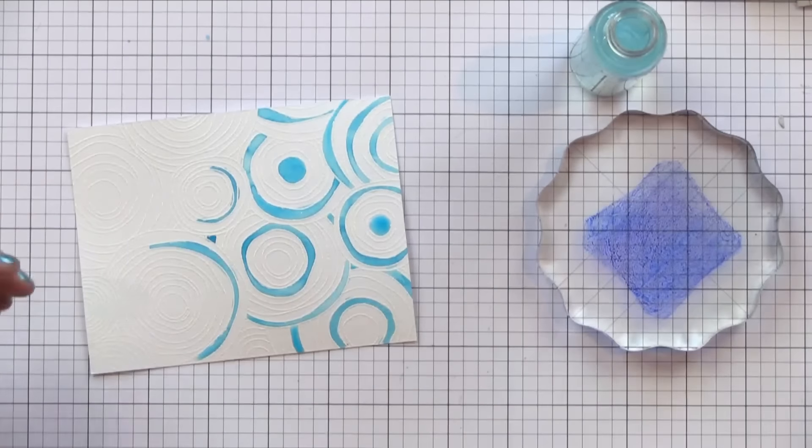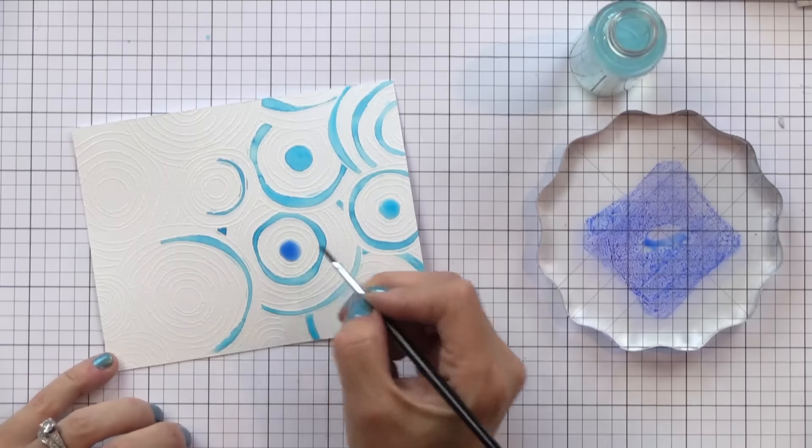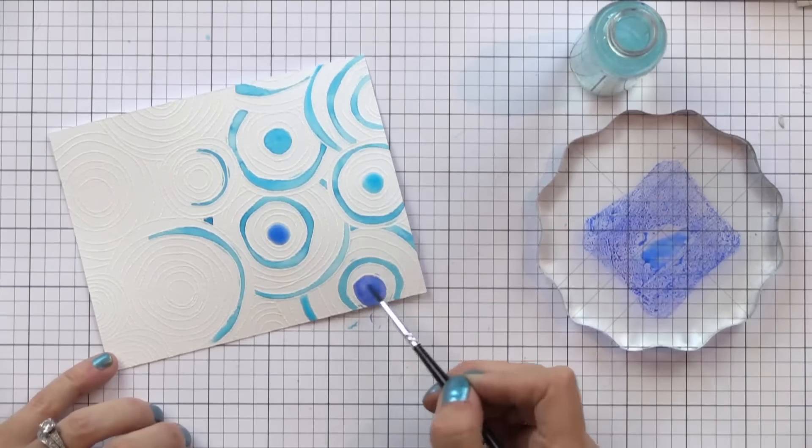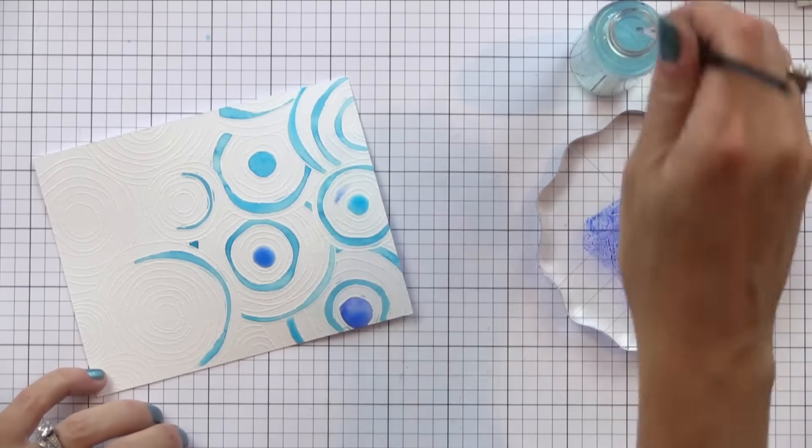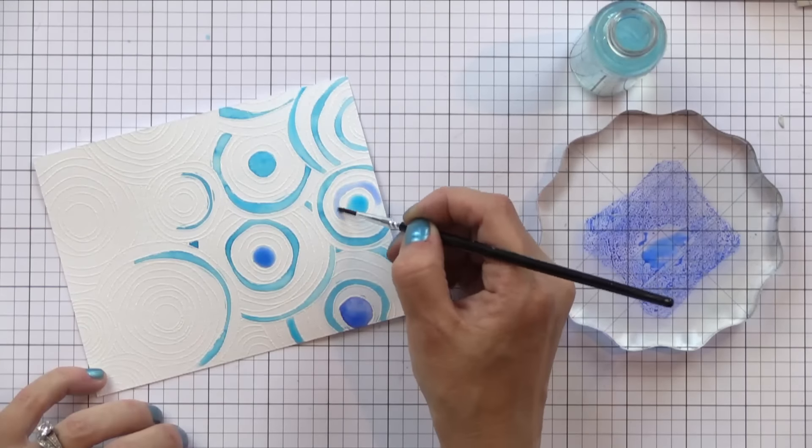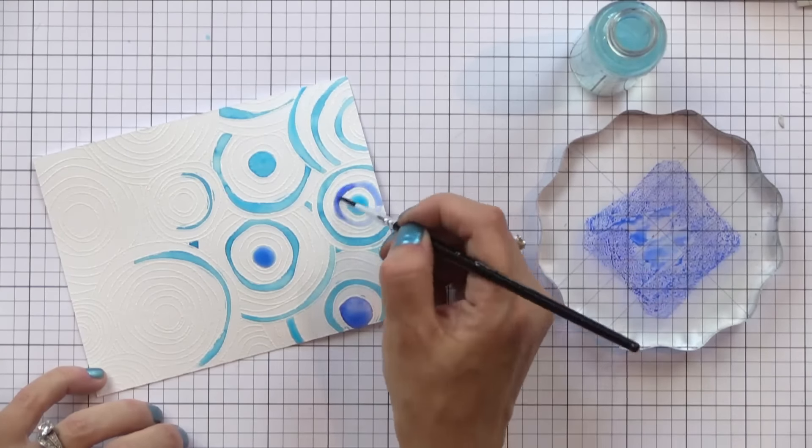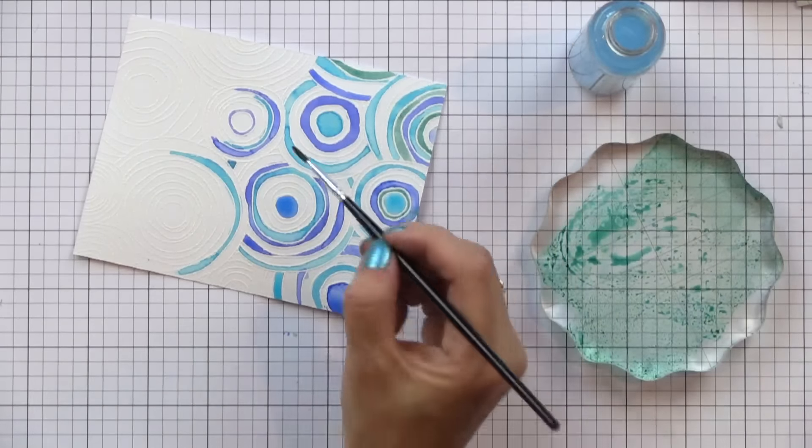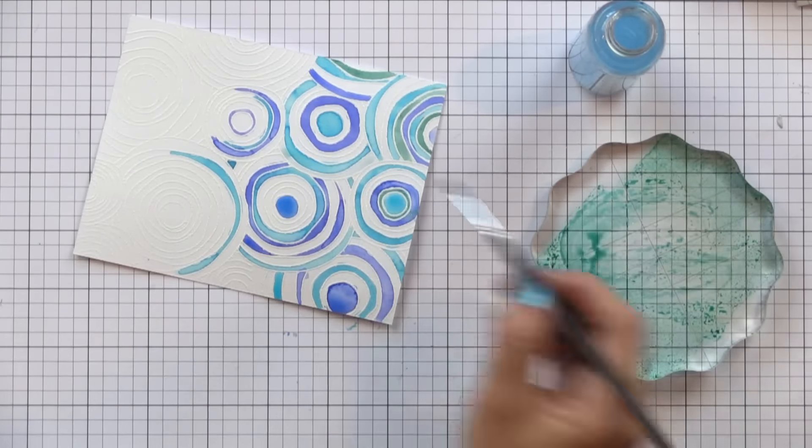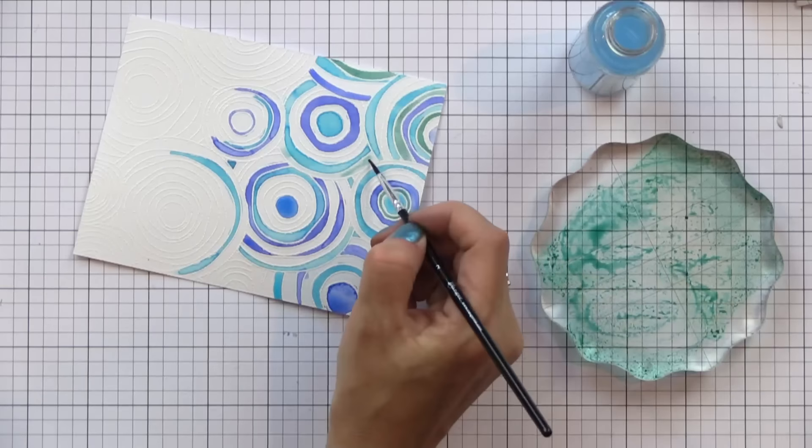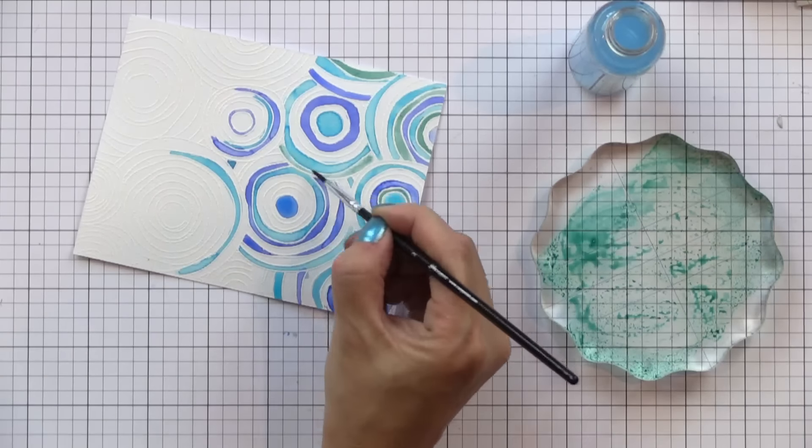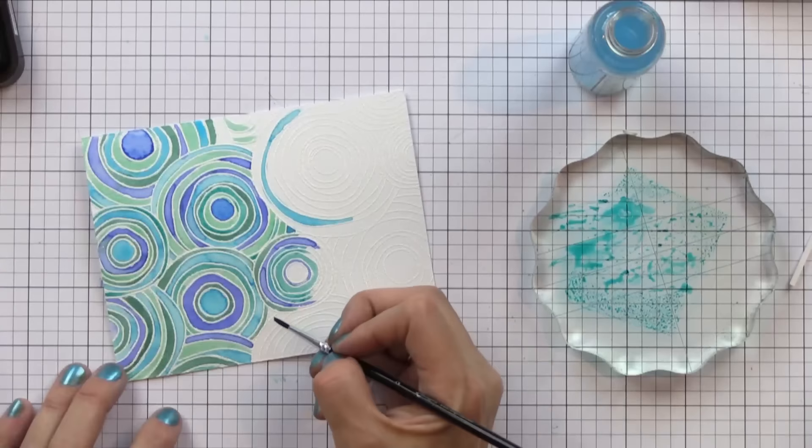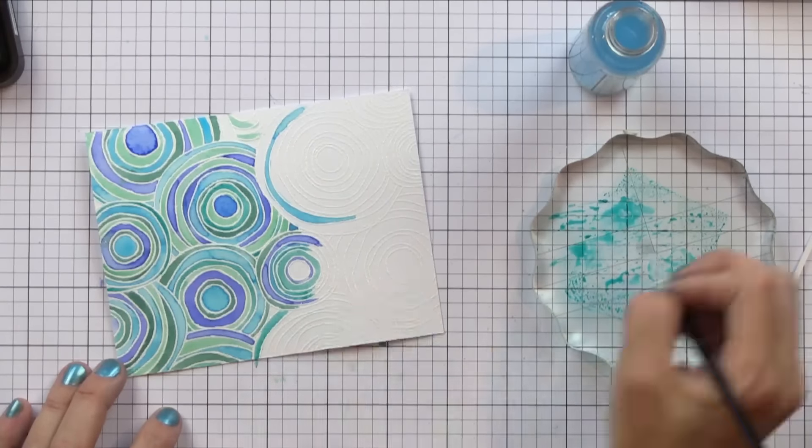One thing you want to be careful of is that you don't put water down next to an area where it's still wet because the two areas will bleed together. So I'm kind of moving around and doing some circles here and there that are separated while they dry. Once the color is dry you can go ahead and do the colors right up against it. So you can see each time I'm putting down water first and then dropping in color from my distress inks. You can do this with any kind of watercolor. Distress inks are great for it. The nice thing about distress inks is they can be used for watercolor techniques and other stamping techniques so you can get a lot of use out of them.